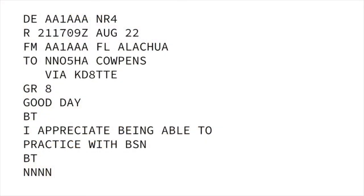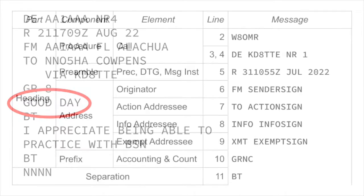This is a message that is coming in, and it's in the 16-line format — very nice. We see a good use of folding in the "to" addressee. The action addressee is clear; there's only one, but there's some multi-row information there. We've got a group count of 8 — that looks good. And then we run into "good day." I'm not sure what that is — "good" is not a pro word, and it's not anywhere in the heading of the basic message format.